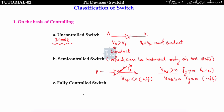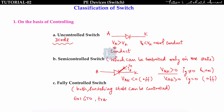Fully controlled switches can be controlled in both switching states — turn-on and turn-off. Examples include GTO, BJT transistor, MOSFET, and IGBT.